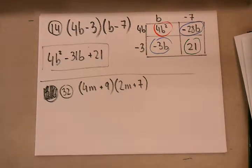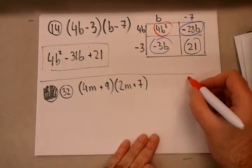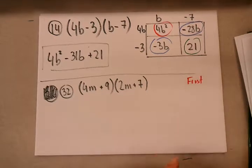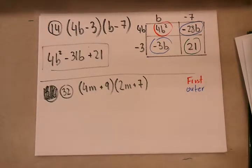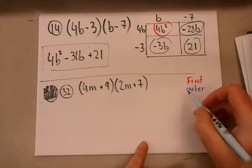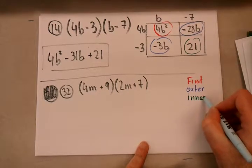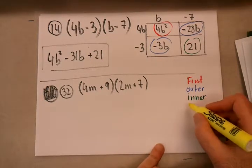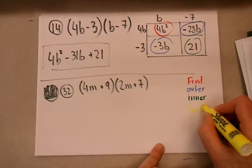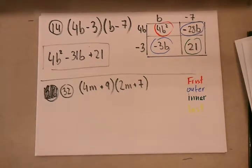I'm going to use the FOIL method. FOIL means: First, then Outer, then Inner, and then Last. That tells me the order of the monomials I should multiply.